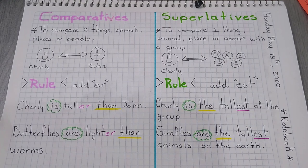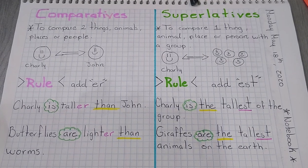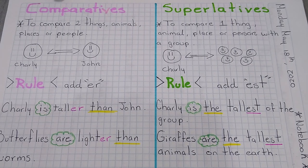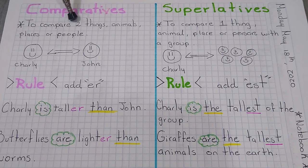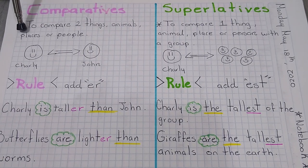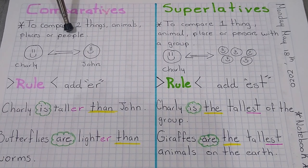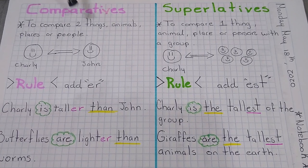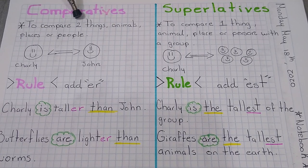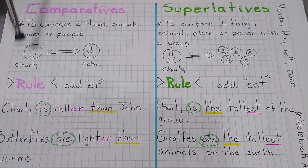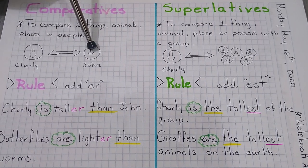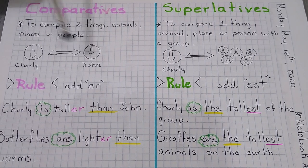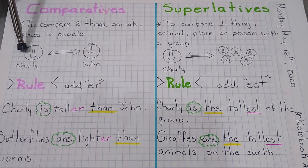Let's remember the rules for these structures. Let's start with the comparatives. We use the comparatives to compare things, animals, places or people. Remember, we are going to compare two — just two. This is important. For example, we have Charlie and John. We have two people.